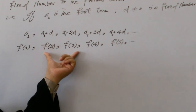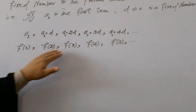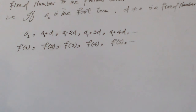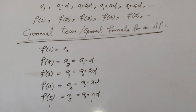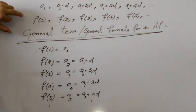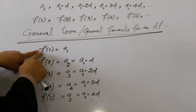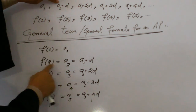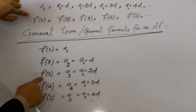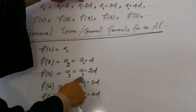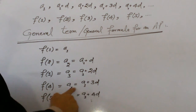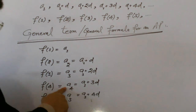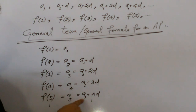Now to calculate the general formula, the general function. In the arithmetic sequence, F(1) equals A1, F(2) equals A1 plus D, denoted by A2. F(3) equals A1 plus 2D, denoted by A3. F(4) equals A1 plus 3D, denoted by A4. F(5) equals A1 plus 4D, denoted by A5, and so on.